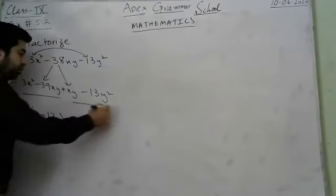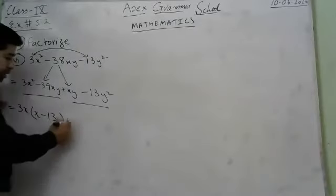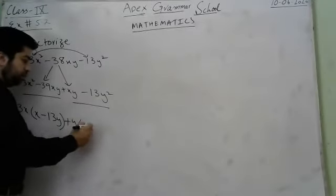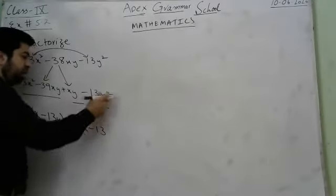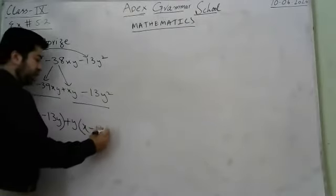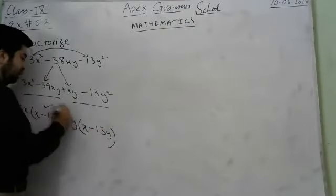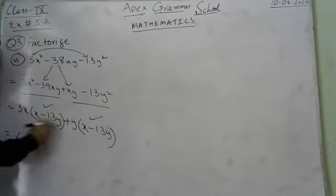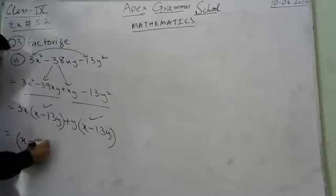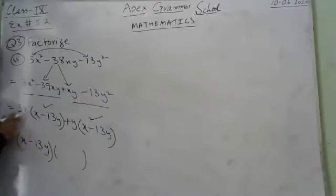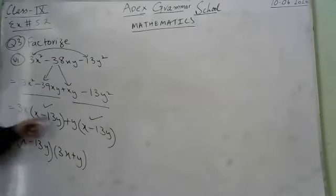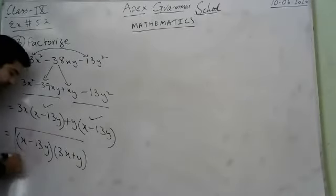Both groups have the common factor (x minus 13y). Taking that out, we get (x minus 13y)(3x plus y). This is the final factorization of question 3 part 6.